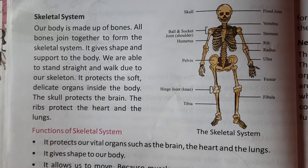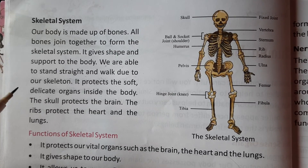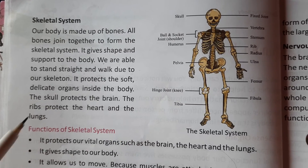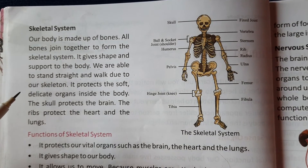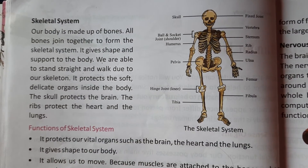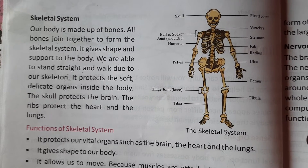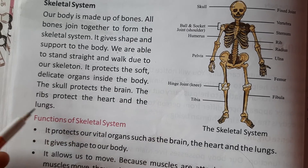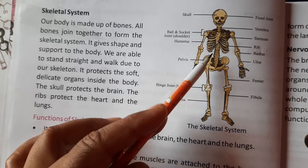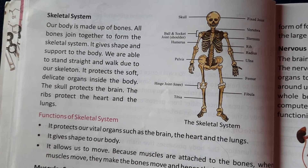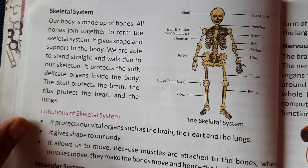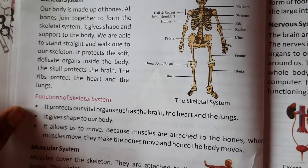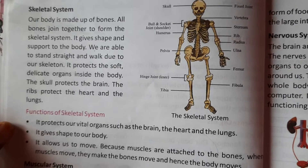The skeletal system also protects the soft, delicate organs inside the body — for example, our lungs, heart, and brain. The skull protects the brain. You can see the skull in this diagram. The ribs — called 'pasliyan' — protect the heart and the lungs. If we get hurt, the ribs and skull take the impact so that the delicate internal organs are not injured.